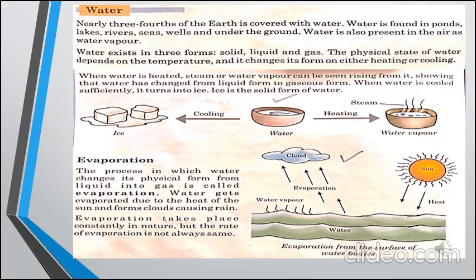Evaporation کے process میں water کی physical form liquid سے gaseous form میں change ہوتی ہے، اس کو ہم evaporation کہتے ہیں۔ Sun کی heat کی وجہ سے جب water heat up ہوتا ہے تو water vapors cloud کی شکل میں جمع ہونا شروع ہو جاتے ہیں۔ یہ clouds جب بہت زیادہ heavy ہو جاتے ہیں تو rain کی form میں زمین پر واپس آ جاتے ہیں، پھر heat دوبارہ water vapor میں change کرتی ہے۔ یہ evaporation کا process continuously nature میں ہو رہا ہے۔